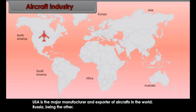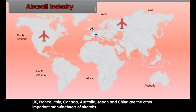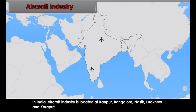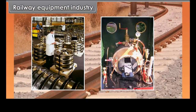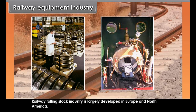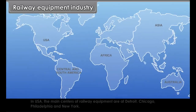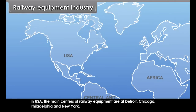The manufacture of aircraft is a capital-intensive industry dependent on high-level engineering skills and huge capital investment. Civilian aircrafts transport goods and passengers, while military aircrafts are used for fighting operations. USA is the major manufacturer and exporter of aircrafts in the world, with Russia being the other major producer. UK, France, Italy, Canada, Australia, Japan, and China are other important manufacturers. In India, aircraft industry is located at Kanpur, Bangalore, Nashik, Lucknow, and Koraput.